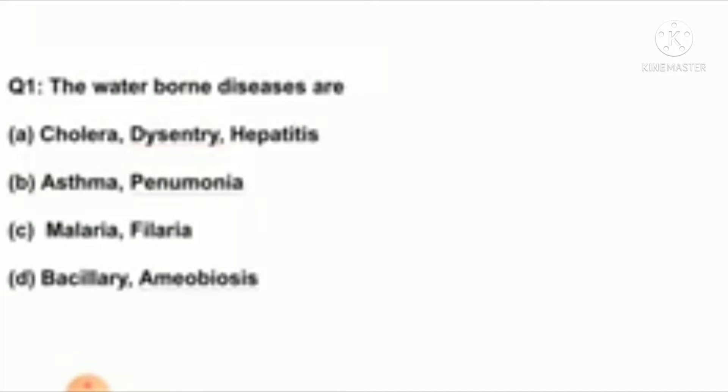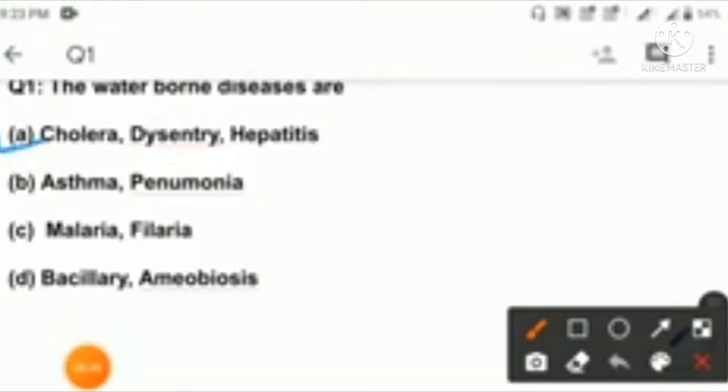Question number one: the waterborne diseases are option A: Cholera, Dysentery, Hepatitis; option B: Asthma, Pneumonia; option C: Malaria, Filaria; option D: Bacillary, Amoebiosis. Here the right answer is option A: Cholera, Dysentery, Hepatitis.